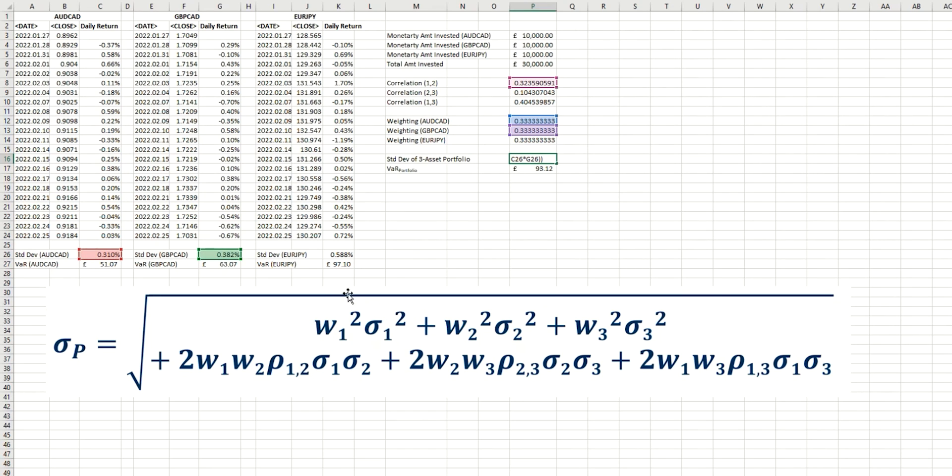So in terms of the calculation we have here at the top, we already have this one in place. We have this one in place, and we have this one in place. So we just need to add these three additional terms to the formula that we see here. So let's just go ahead now and do that. So we need to have the weight of the third position multiplied by itself, effectively squared. And then multiplied by the standard deviation of the individual position, also squared. And so that's this term here now in place.